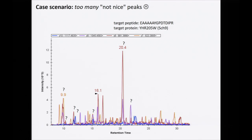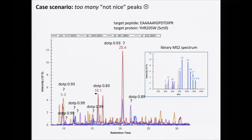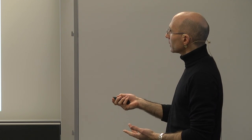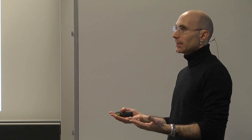Sometimes it gets really more tricky, and even the dot product doesn't tell you very much. You can probably reject very low dot product peaks, but when you have three peaks all with about 0.99 dot product, it becomes very hard to tell them apart even with known library spectra in the background. This is the case of a peptide in a light background.